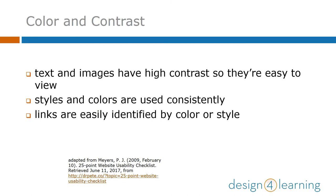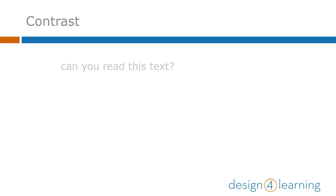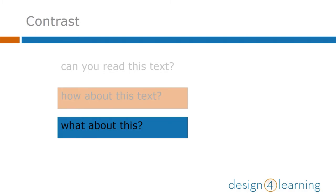First, color and contrast are very important to help your learners view your content easily. Text and images should always have high contrast, consistent styles and color palettes, and links that are easy to identify as links. For example, can you read this text with a light font against white? How about the next row, with a light font against a background color? Or the next row, with black text against a dark background color?